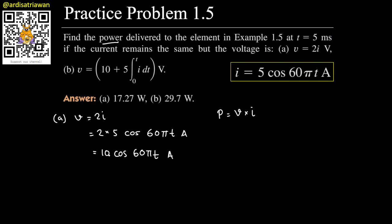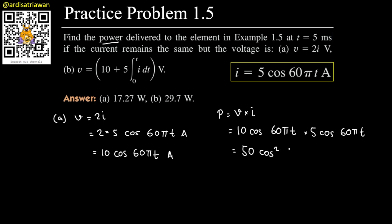So p = v × i = 10 cos(60πt) × 5 cos(60πt). That gives us p = 50 cos²(60πt), since both cosine terms are identical. We need to evaluate this at t = 5 milliseconds.